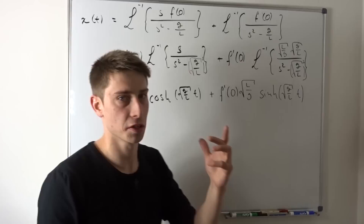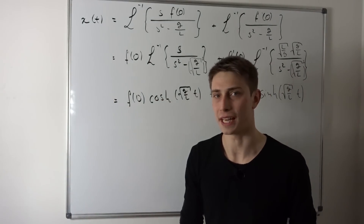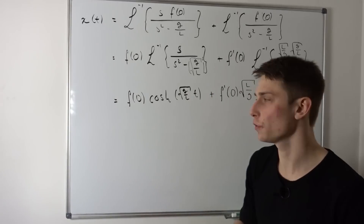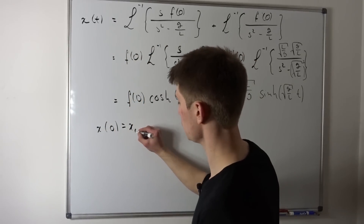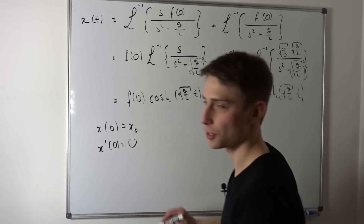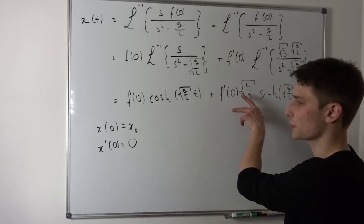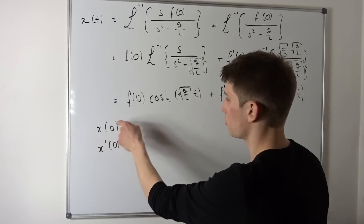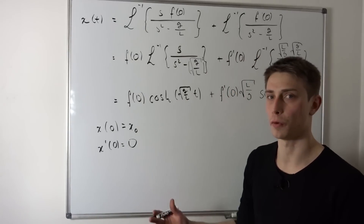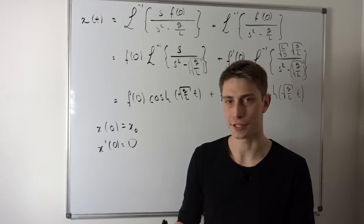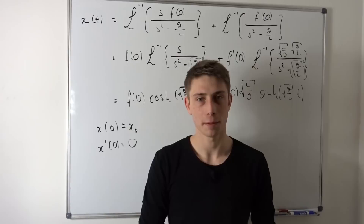We've solved the differential equation. This is the most general form. Now let's apply the initial values from our earlier example: x(0) = x₀ and x'(0) = 0. The second term cancels completely, and we get x(t) = x₀ · cosh(√(g/l) · t). This fits with our Newtonian mechanical system and the initial value differential equation. That's great.